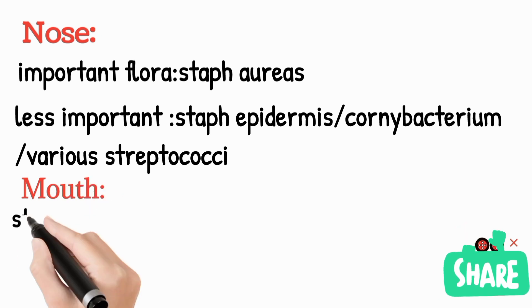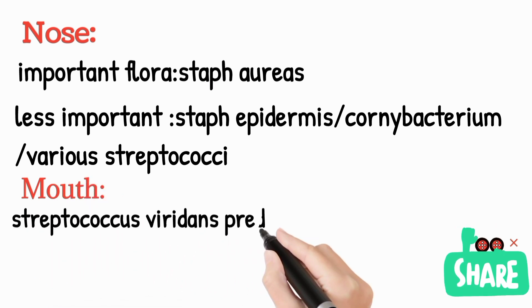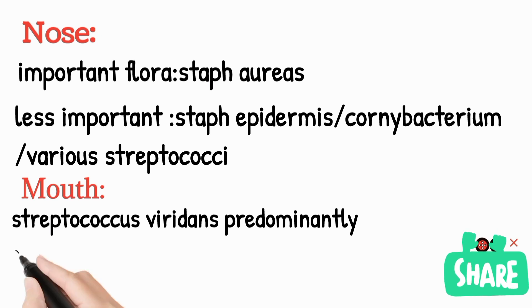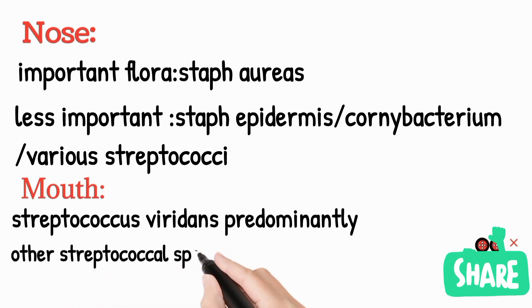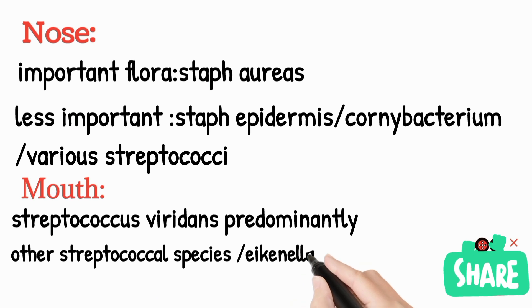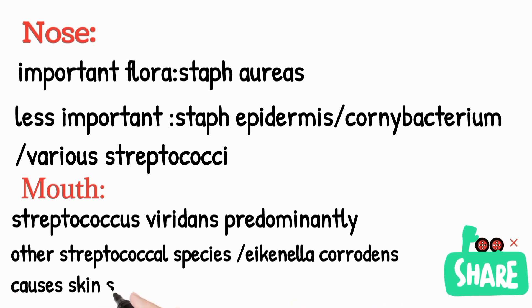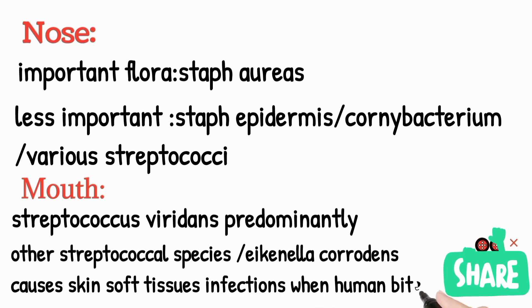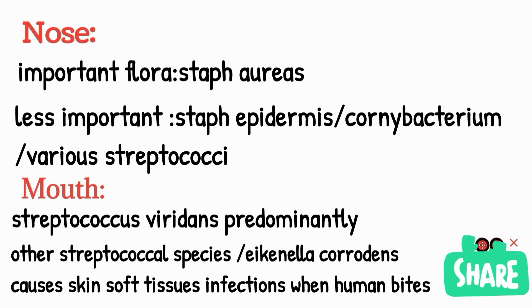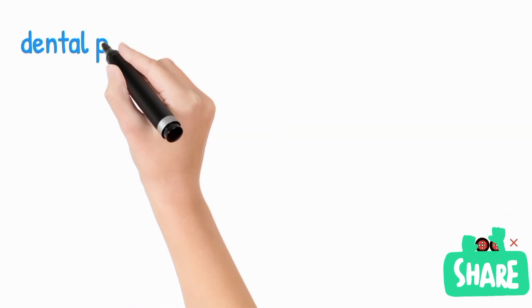In the mouth, Streptococcus viridans is the predominant normal flora. Other streptococcal species and Eikenella corrodens are also present but less important. Eikenella corrodens is especially important in causing soft tissue infection when a person bites another person — it is responsible for causing soft tissue infection in that person's skin.